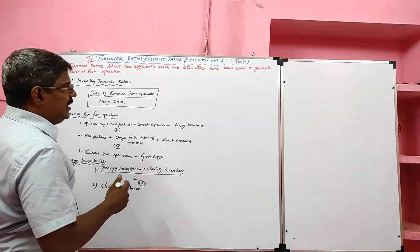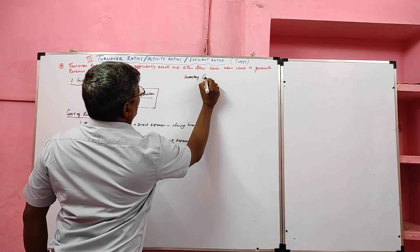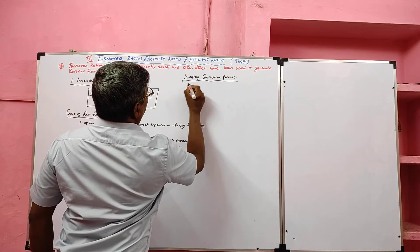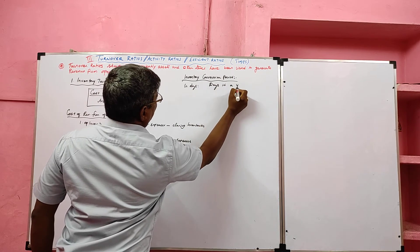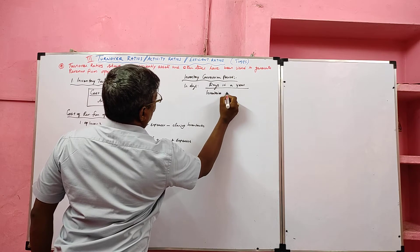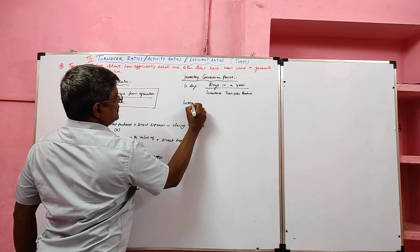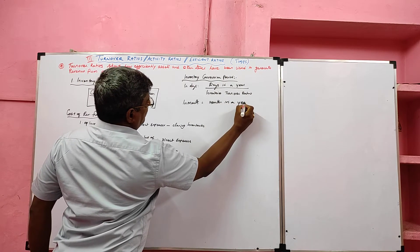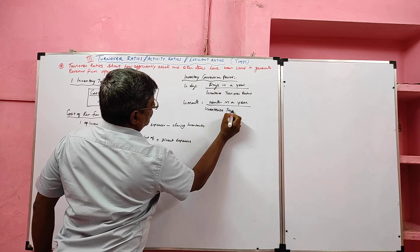Then we have to learn about inventory conversion period. If they ask in days, the formula is: days in a year divided by inventory turnover ratio. If they ask in months, the formula is: months in a year divided by inventory turnover ratio.